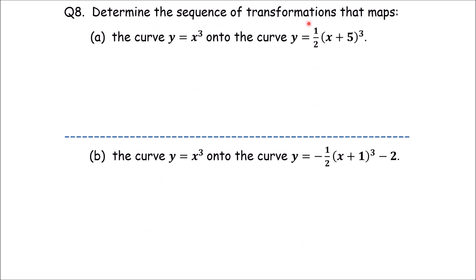Determine the sequence of transformations that maps the curve y equals x cubed onto the curve y equals half of (x+5) to the power of 3.